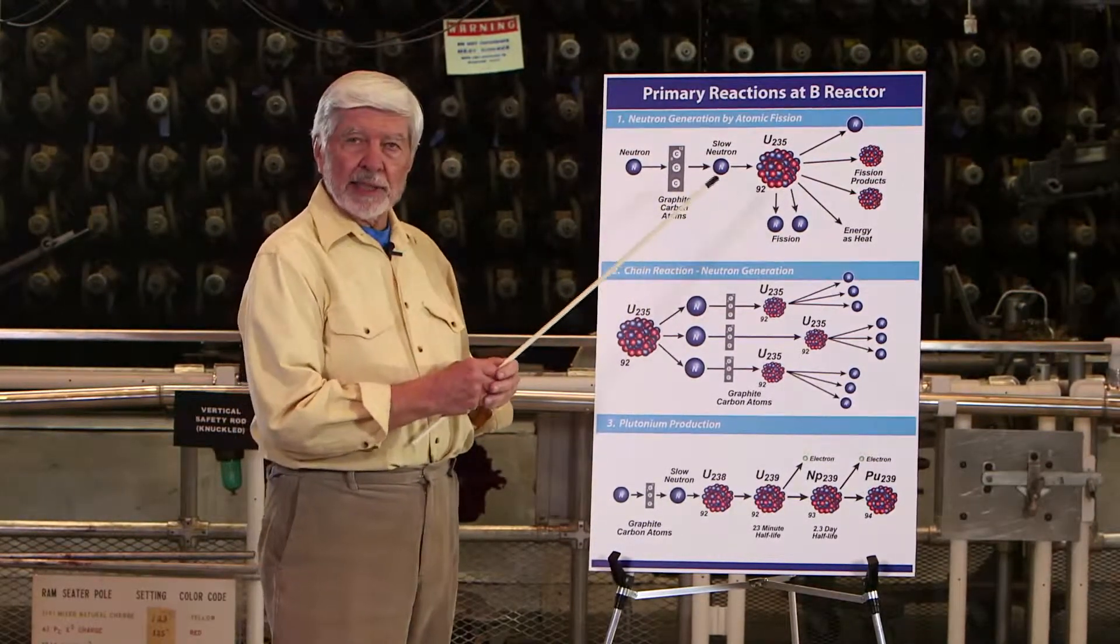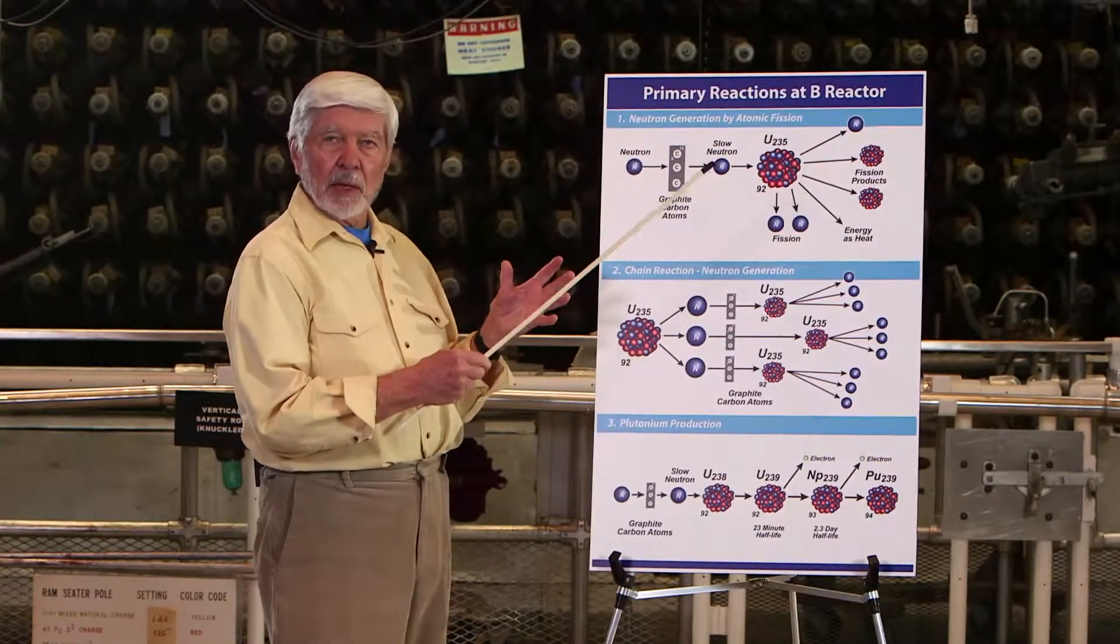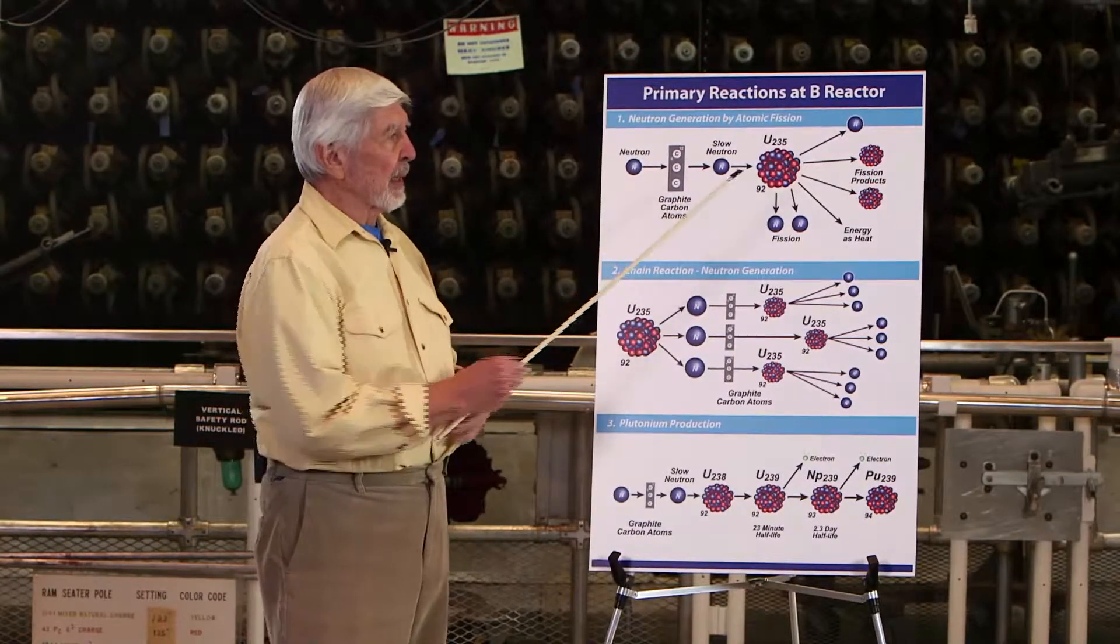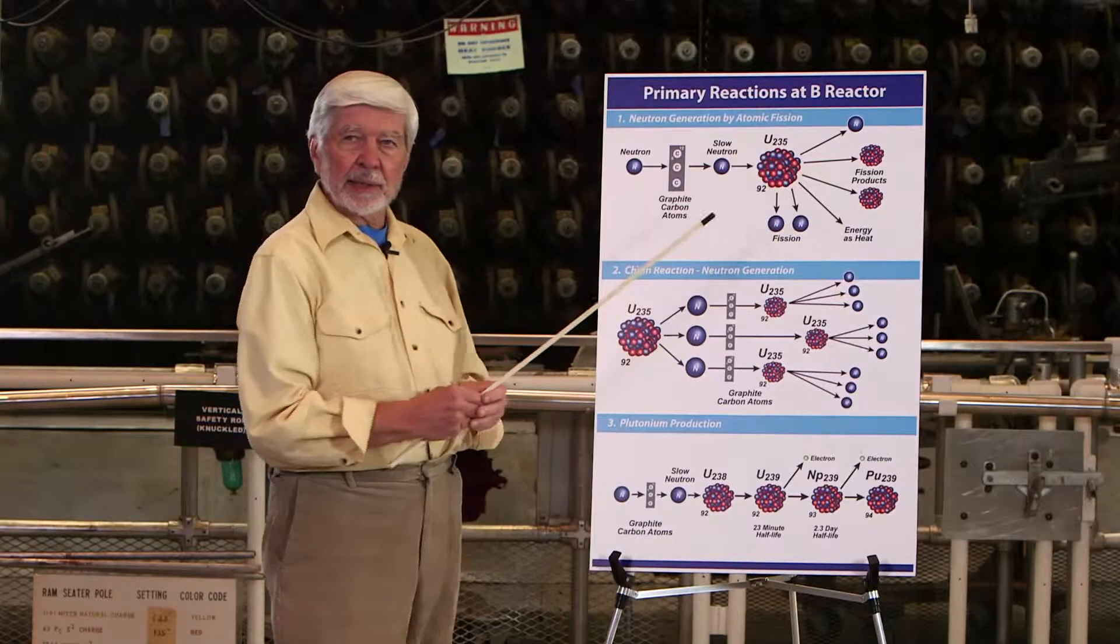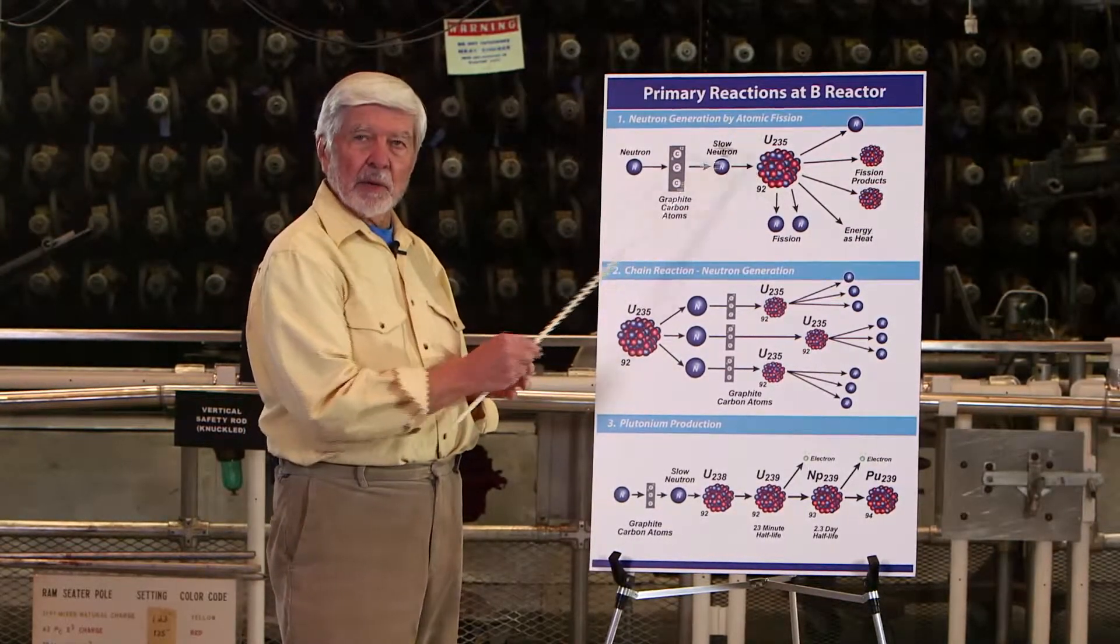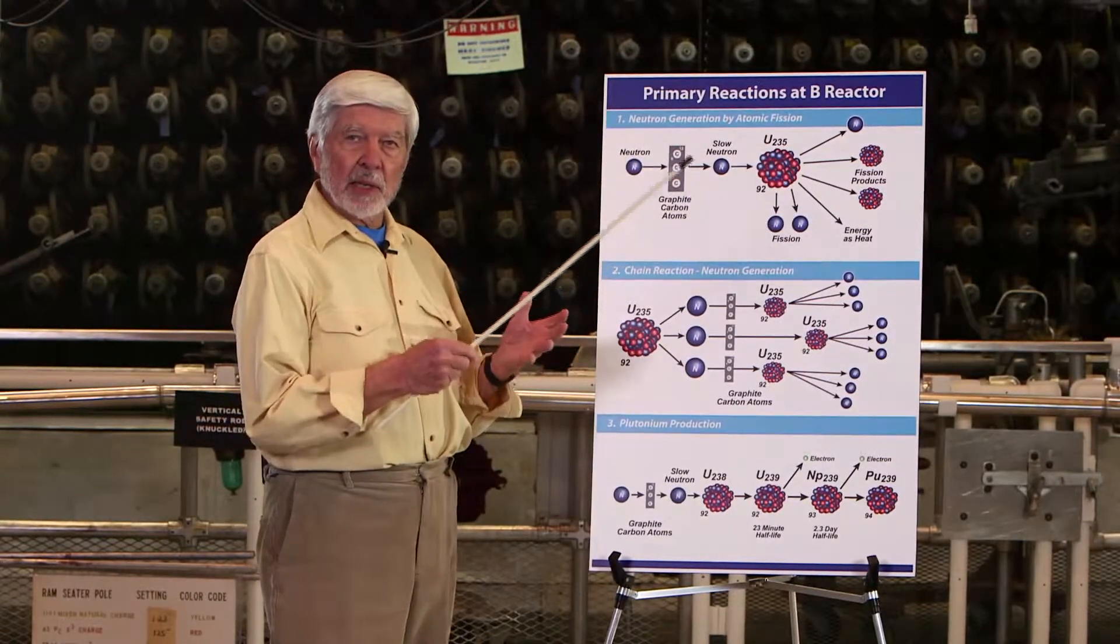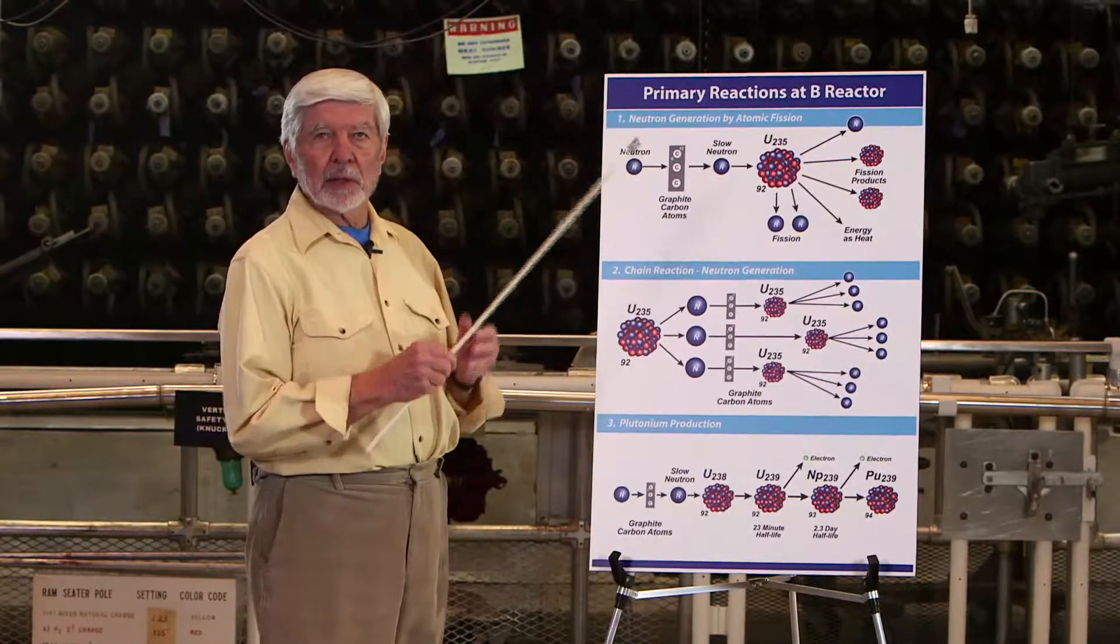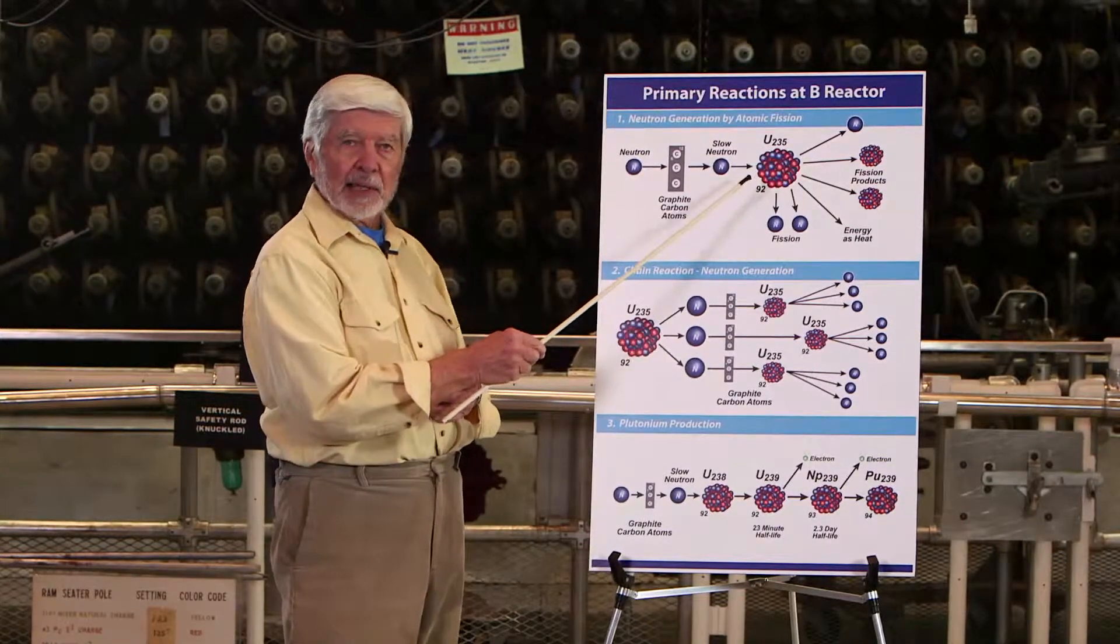The fission products are unstable and kick out two to three neutrons with each reaction. The combined atomic weight of the two fission products is very slightly less than the atomic weight of uranium-235, which means we have lost mass. Einstein's theory says if you lose mass, you gain energy, and that's exactly what happens in the fission reaction.